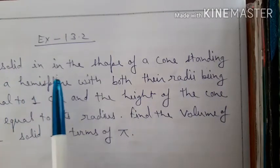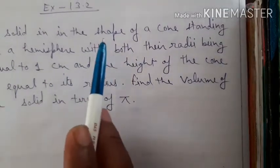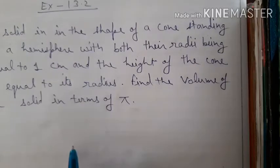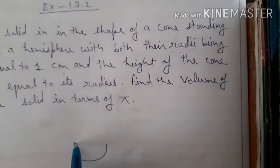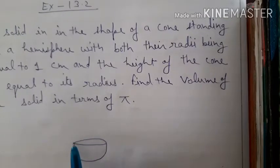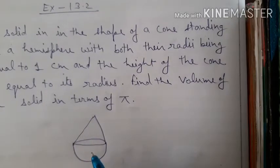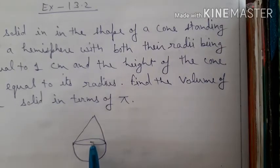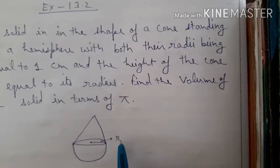It is given that a solid is in the shape of a cone standing on a hemisphere. The cone is standing on top of the hemisphere like this. Suppose this is the hemisphere and this is the cone. The cone is standing on the hemisphere, and both the radii are equal — the radius of the hemisphere and cone are equal.